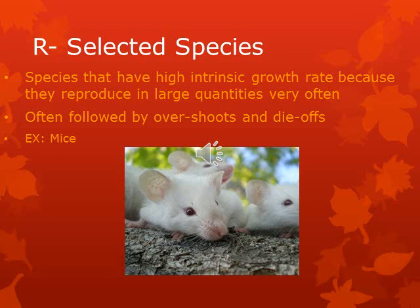Opposed to K-selective species, R-selective species don't remain near carrying capacity and are defined by rapid and explosive reproduction rates. R-species are also defined by short life spans and short reproductive maturity, numerous reproductive events in offspring, and little parental care. They also have fast population growth rates. An example of an R-selective species is mice.